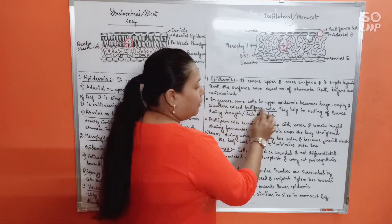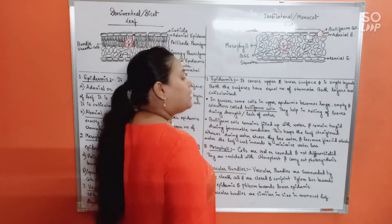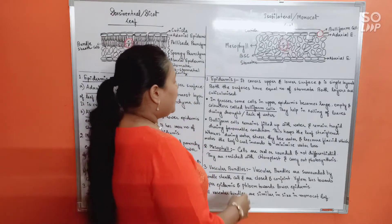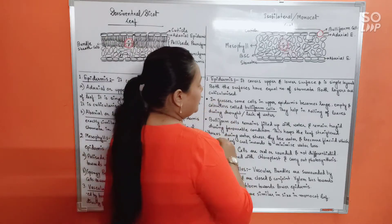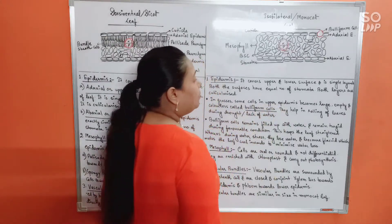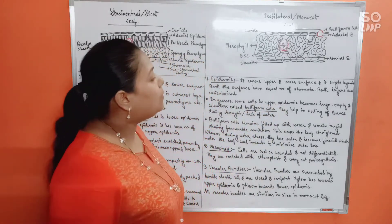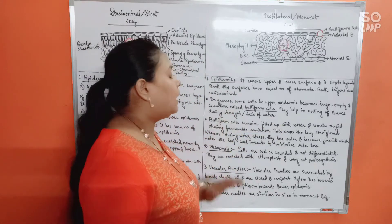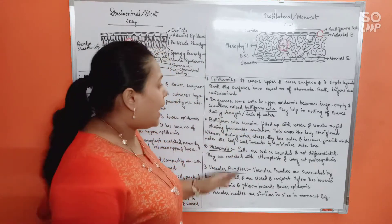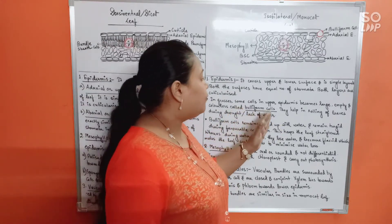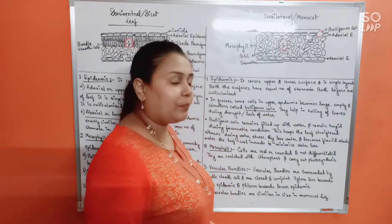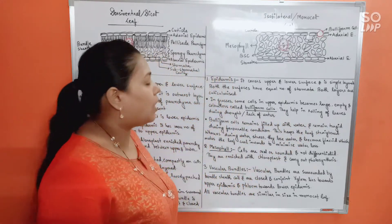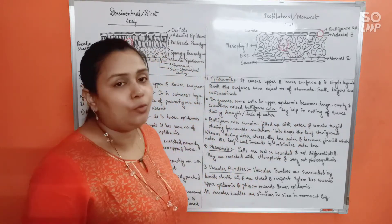In grasses, some cells in the upper epidermis become large, empty, and colorless — these are called buliform cells. They help in the rolling of leaves during drought or lack of water.